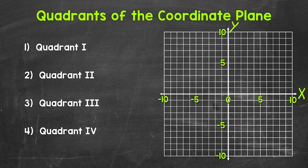The x-axis and y-axis intersect and divide the coordinate plane into four sections, and these sections are called quadrants: quadrant 1, quadrant 2, quadrant 3, and quadrant 4. Let's label each of these quadrants, starting with quadrant 1.